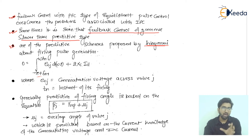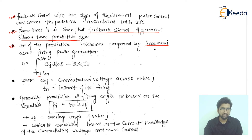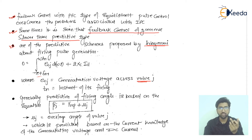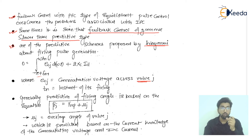In Hingarani's firing pulse generation equation, ω is the frequency in radians per second, X_c is the capacitor reactance, and i_d is the DC current. The term e_cj is the commutation voltage across valve j. For a six-pulse thyristor system we have six valves; for example, if we consider valve number three, we write e_c3. The term t_n is the instant of firing of that valve.